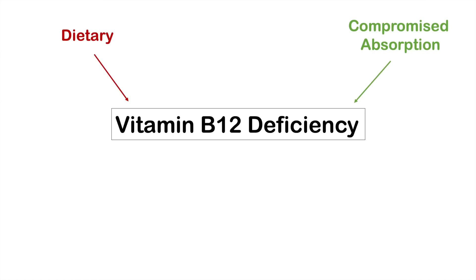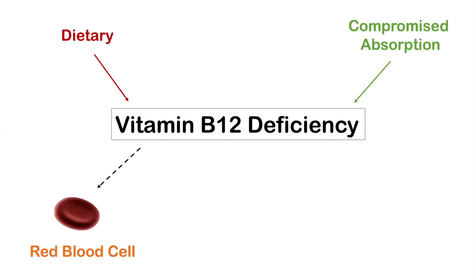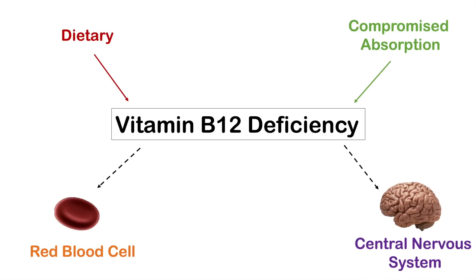Vitamin B12 is so important because it's required for the production and health of red blood cells and also the health of the central nervous system. We're going to talk about why that is and what happens when we don't have enough vitamin B12 in our bodies.